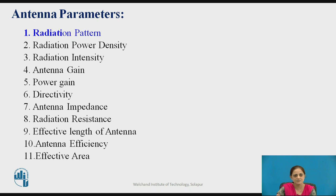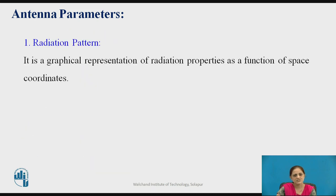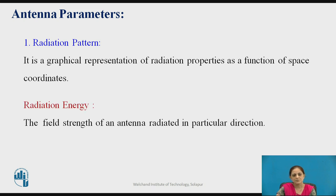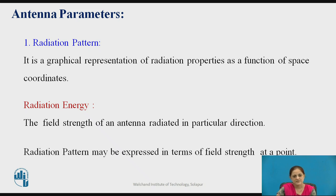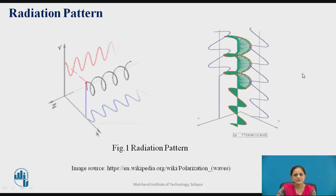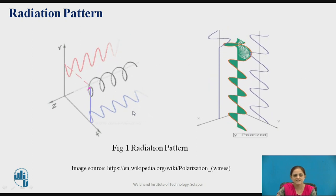First is the radiation pattern. The radiation pattern is the graphical representation of radiation as a function of space coordinates. It can be described in terms of radiation energy or the field strength of an antenna radiated in a particular direction — such as the x, y, or z direction. Thus the radiation pattern may also be described in terms of the field strength at a given point. These two figures show examples of the radiation pattern.